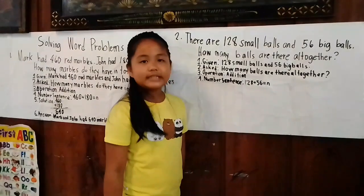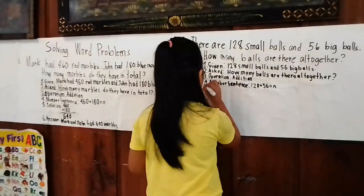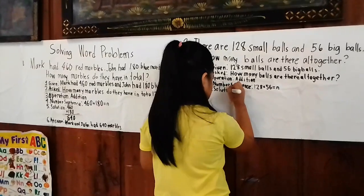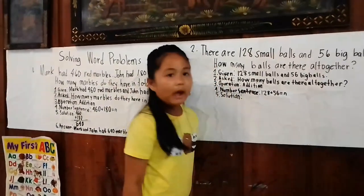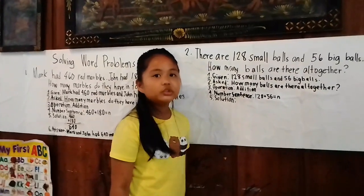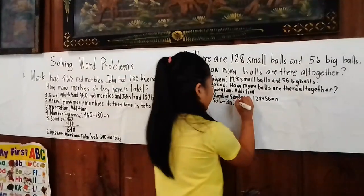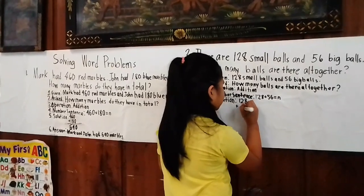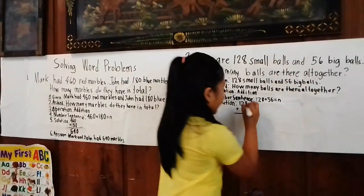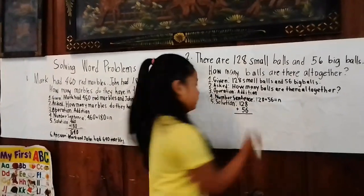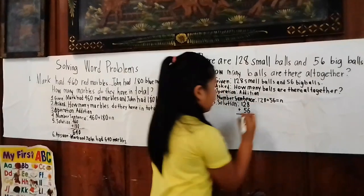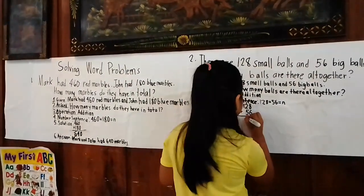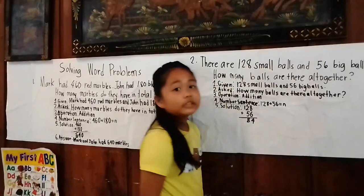The next step is the solution. What will we write in the solution? We will write 128 plus 56. Eight plus six equals 14, carry one. One plus two equals three; three plus five equals eight. Bring down one.